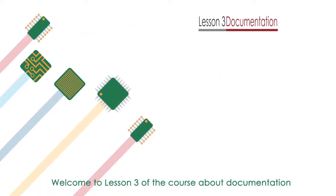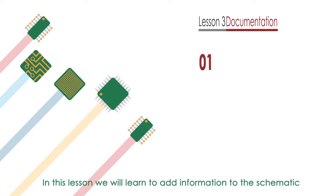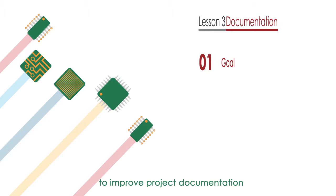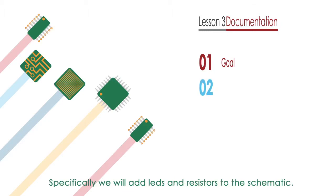Welcome to lesson 3 of the course about documentation. In this lesson we will learn to add information to the schematic to improve project documentation. Specifically we will add LEDs and resistors to the schematic.